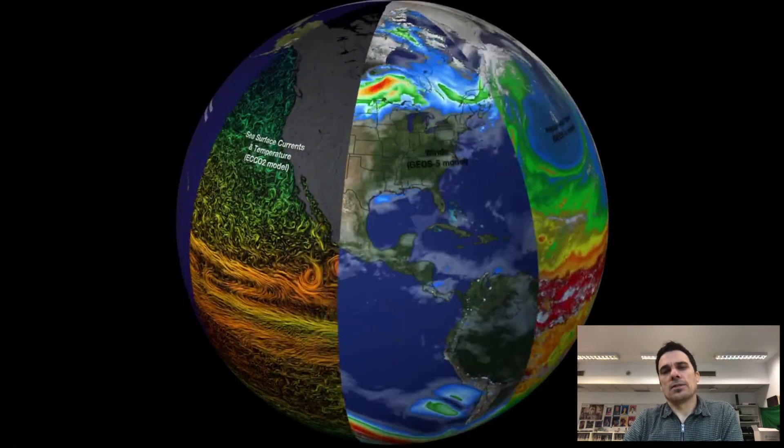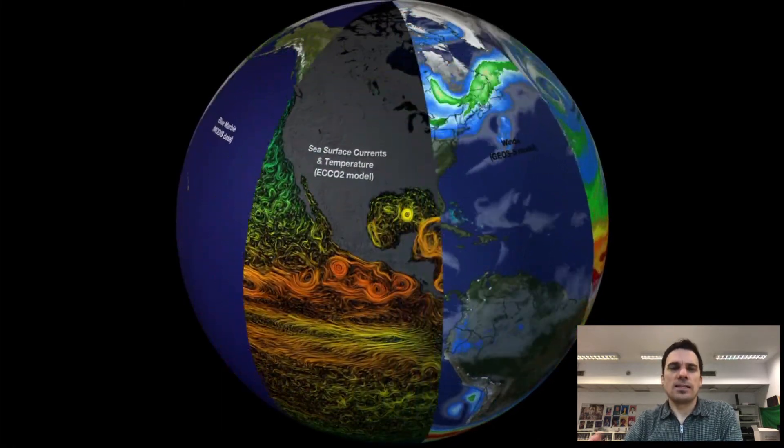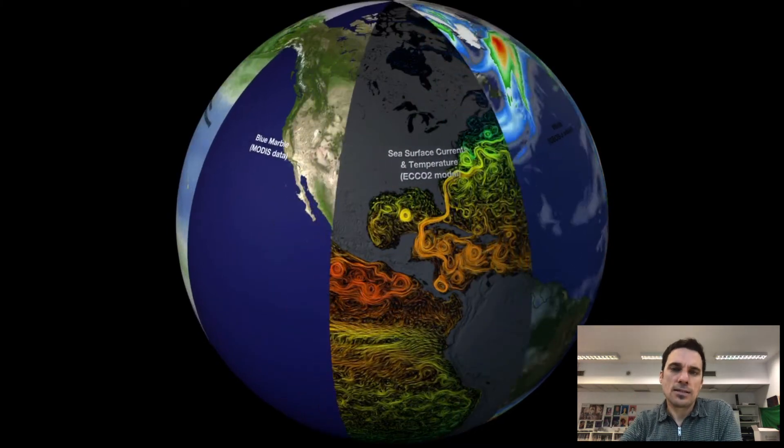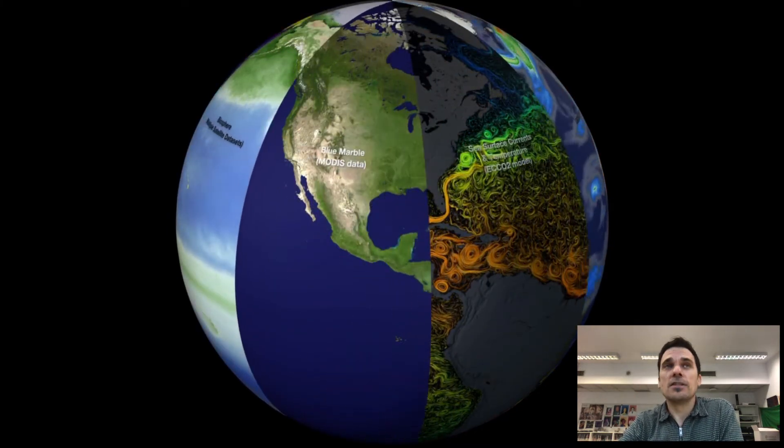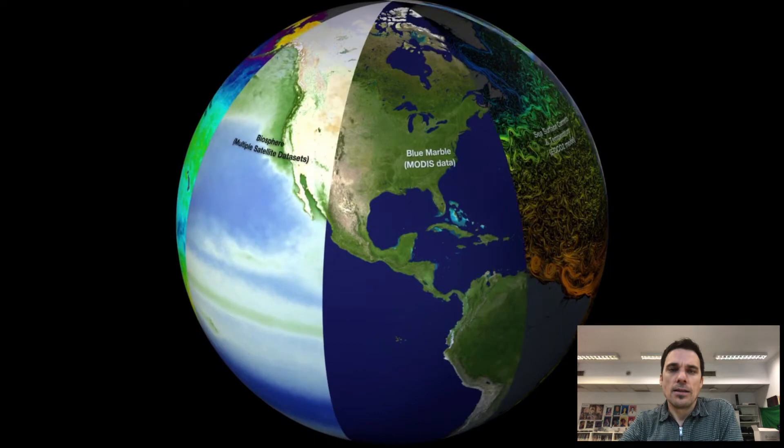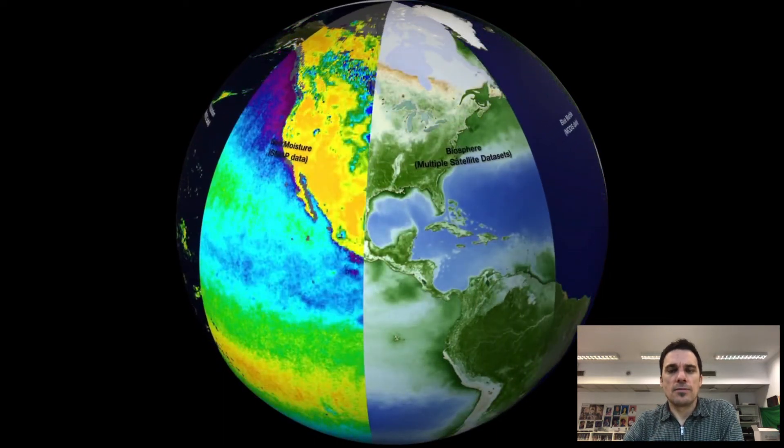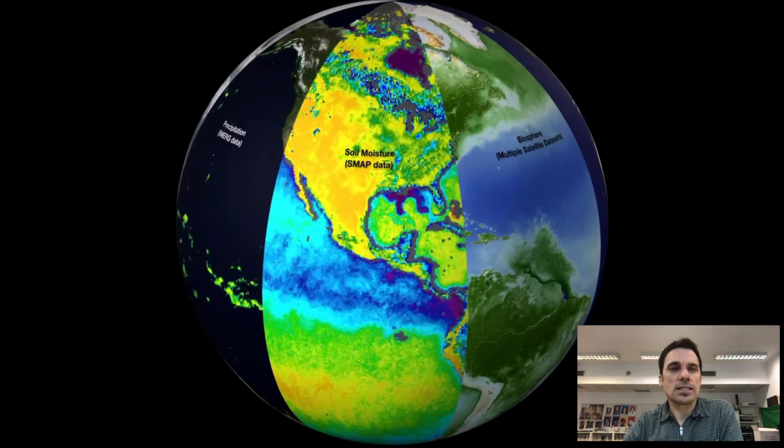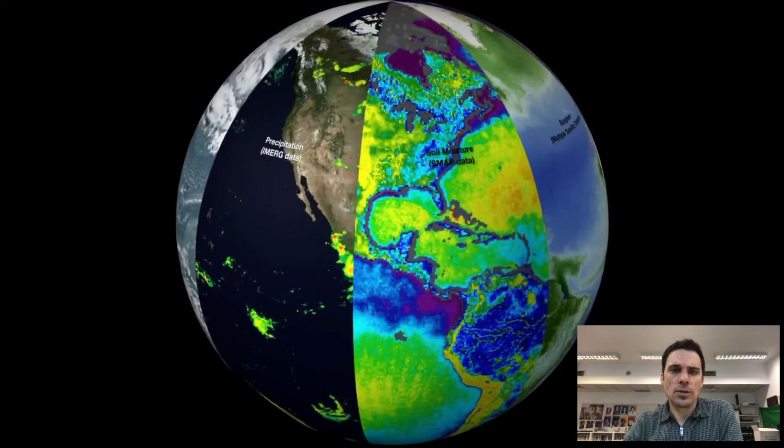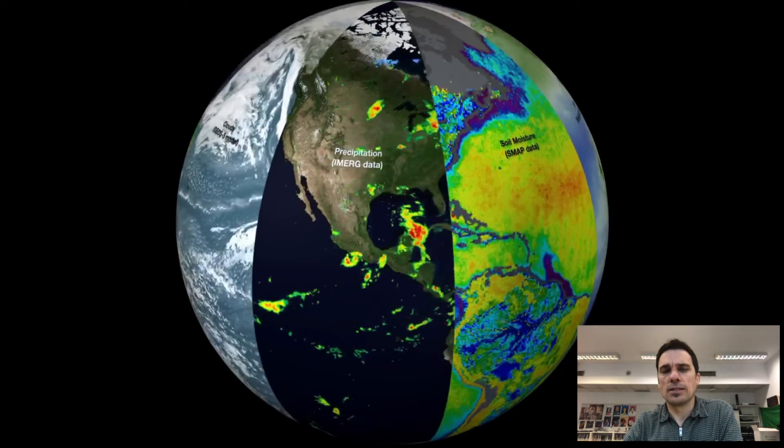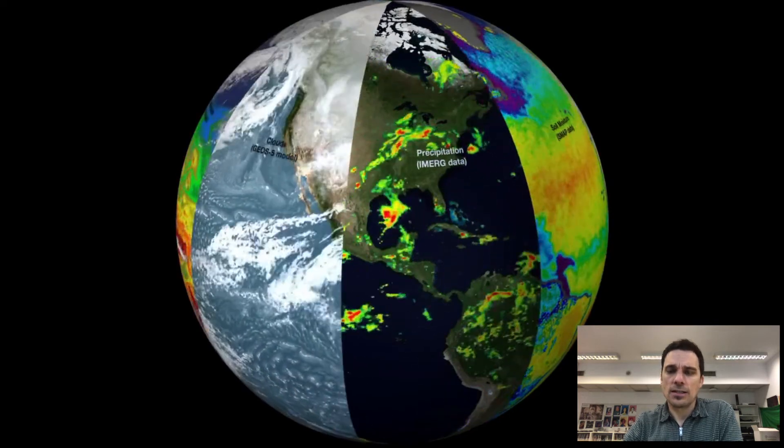So the systems that we'll be looking at sort of entail all of these. NASA has a lot of beautiful visualizations of all their data that you can download for free. This is one of them and it includes a lot of different pieces of the puzzle when we start looking at the water cycle from soil to plants to movements of precipitation and clouds.